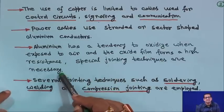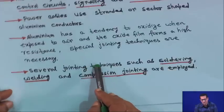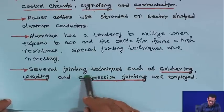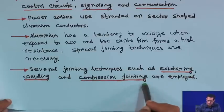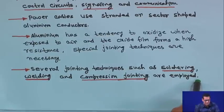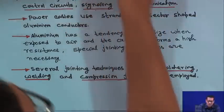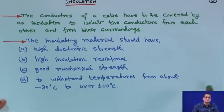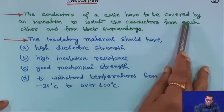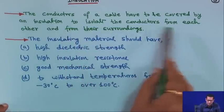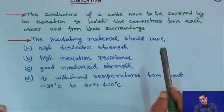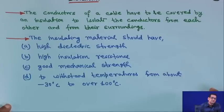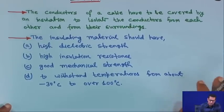Special jointing techniques are necessary for cable jointing. Several jointing techniques such as soldering, welding, and compression jointing are employed. The conductors of a cable have to be covered by insulation to isolate the conductors from each other and from their surroundings. For a 3-phase line with 3-core cables, each one has to be insulated from the others, otherwise there will be a short circuit.